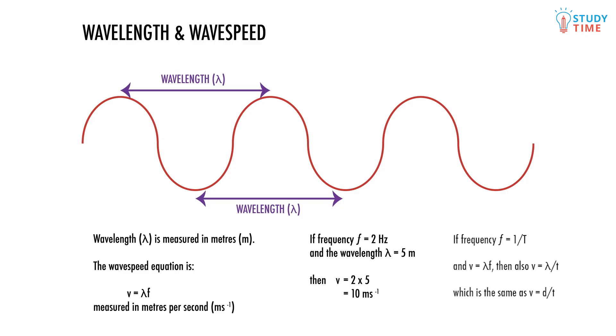Since frequency equals 1 divided by the period t, we can substitute that into V equals f lambda to get V equals lambda divided by t, which is exactly the same as V equals d divided by t, since the wavelength is the distance traveled, and it's over a period of time.